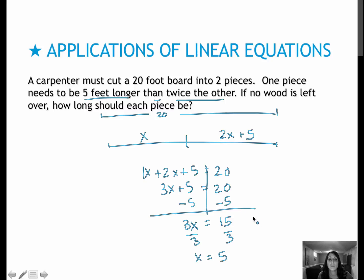What does that tell me? One board is 5 feet, because that is the x length. The other one is 2 times 5 plus 5. So 2 times 5 is 10 plus 5, which is 15 feet. One board is 5 feet, and the other is 15 feet.